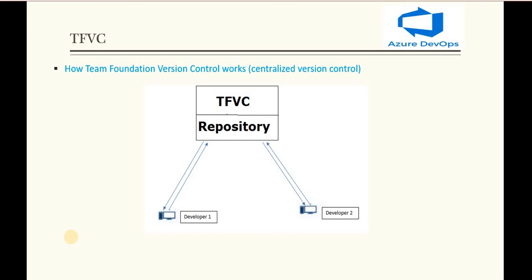TFVC is basically Team Foundation Version Control, or we can say it is a centralized version control. In the given picture you can see we have one repository, and suppose there is one developer who is working on some code or project. What he does is, the first time the developer clones that particular repository or takes that code into the local system and starts working on it. If he makes any changes to that code, he pushes those changes directly into the repository.